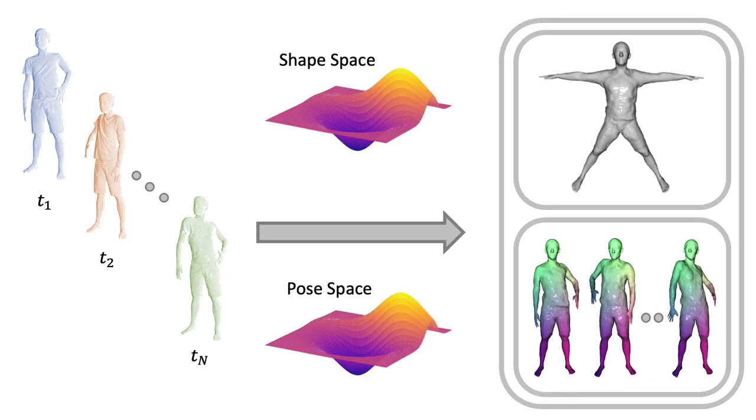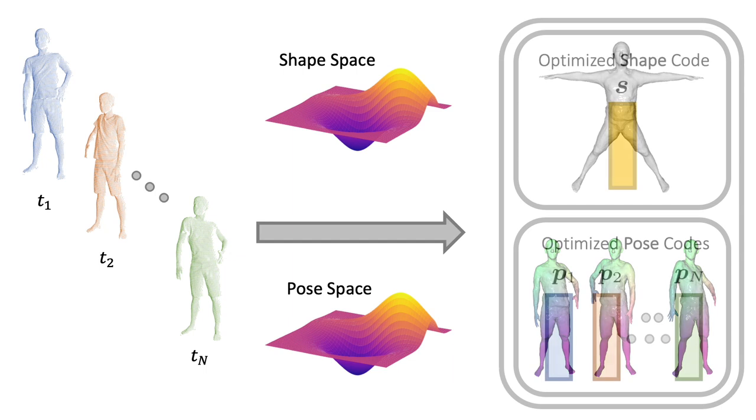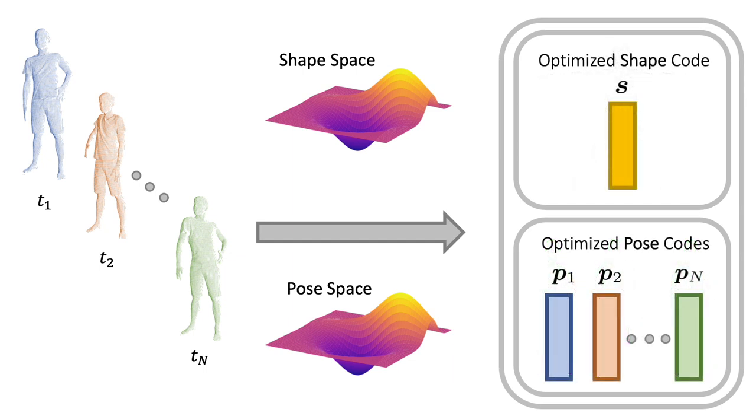Thus, fitting an NPM to an input sequence of N frames amounts to jointly optimizing for a single shape code, as well as for N pose codes, that best explain the observations.